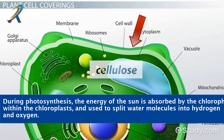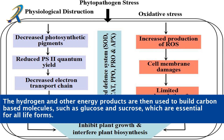During photosynthesis, the energy of the sun is absorbed by the chlorophyll within the chloroplasts and used to split water molecules into hydrogen and oxygen. The hydrogen and other energy products are then used to build carbon-based molecules, such as glucose and sucrose, which are essential for all life forms.